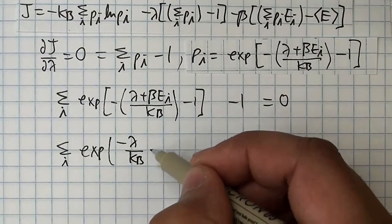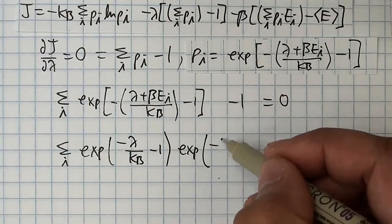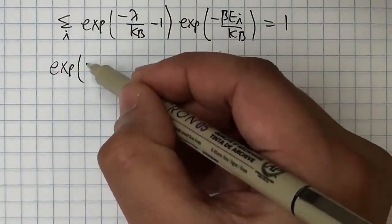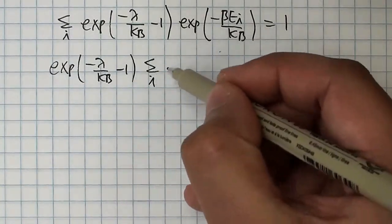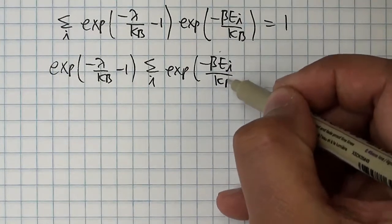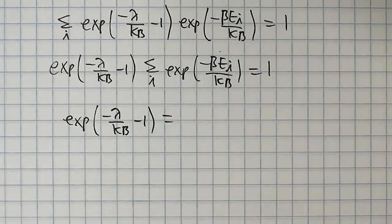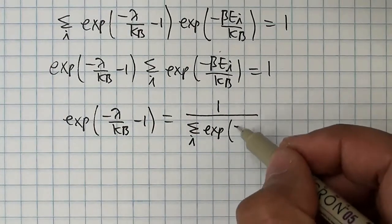First, we can split the exponential up into two terms, one that has the lambda that we are trying to eliminate, and one that has all of the i dependence. We can pull the lambda term, which is constant, out of the sum. If we look at the relationship between these, we see that the lambda term is equal to 1 divided by the sum term.